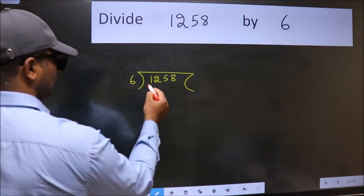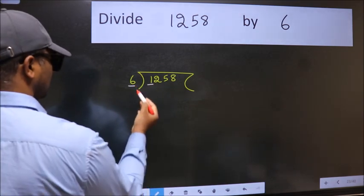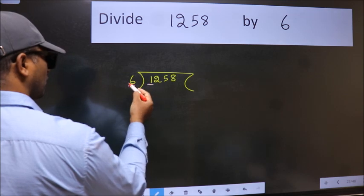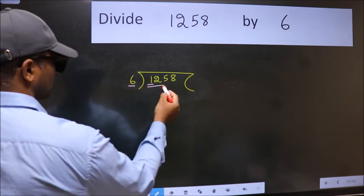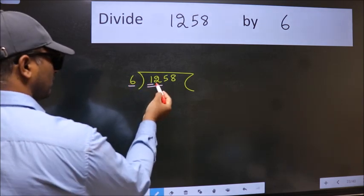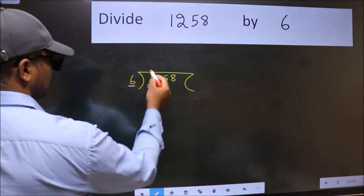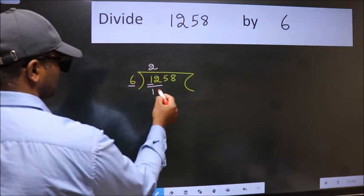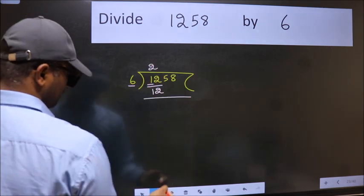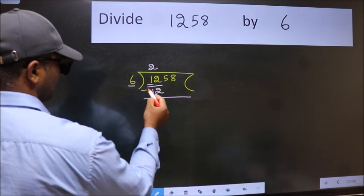Next, here we have 1 and here 6. 1 is smaller than 6. So, we should take two numbers, 12. When do we get 12 in 6 table? 6 twos, 12. Now, we should subtract. We get 0.